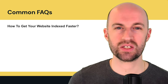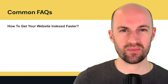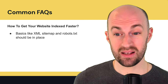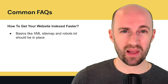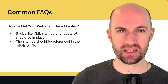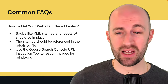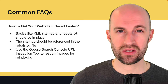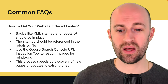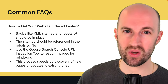FAQ: How do you get your website indexed faster? Sometimes Google takes its time to re-index on its own schedule. Basics like XML sitemap and robots.txt should be in place — and the sitemap should be referenced in robots.txt. You can use the Google Search Console URL Inspection Tool to resubmit pages for re-indexing right then and there, which definitely accelerates the process. If you've updated a page, resubmit the URL to get it re-indexed quicker.